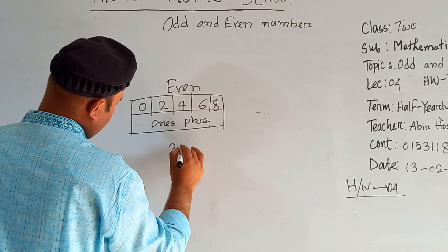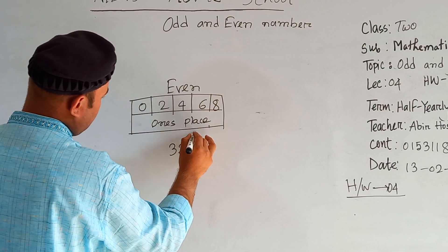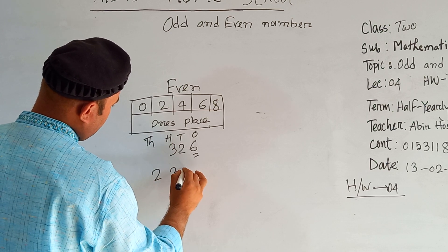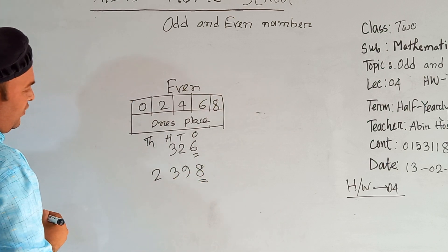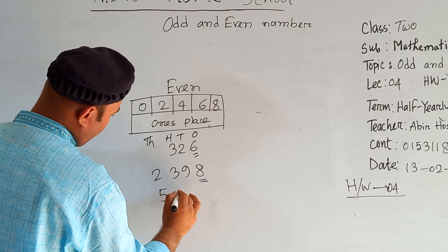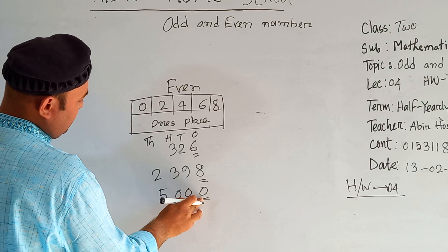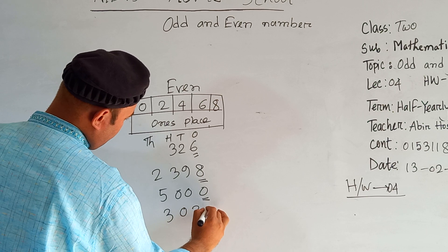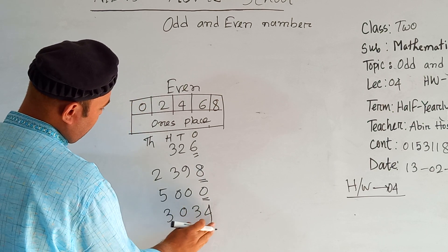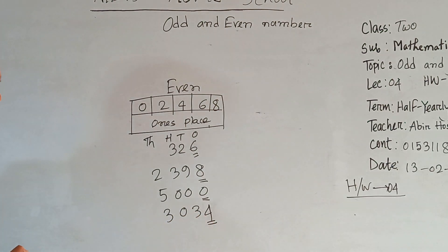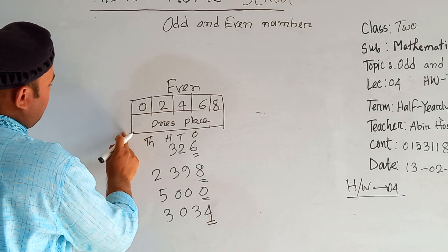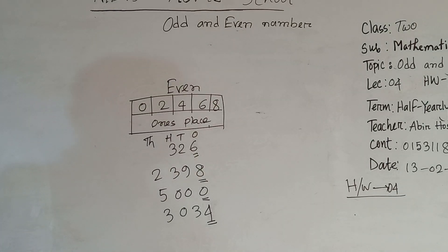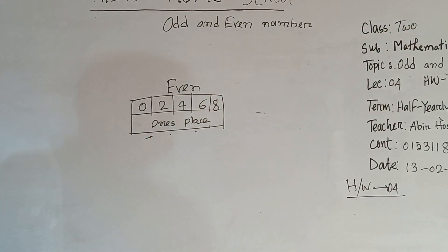If I write here 326, six is in the one's place, so it is an even number. If I write here 2398, eight is in the one's place, so this number is also an even number. If I write here 5000, zero is in the one's place, so this is also an even number. In short, if you see the digit zero, two, four, six, or eight at the one's place of any number, then you can say that number is an even number.